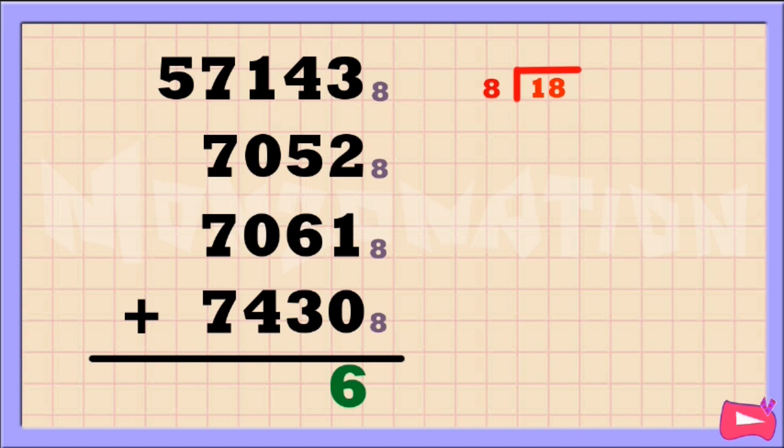18 divided by 8 is 2. 2 times 8 is 16. Now let's subtract: 18 minus 16 is 2. The remainder is our sum and the quotient is our carry.